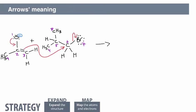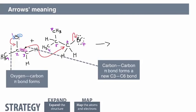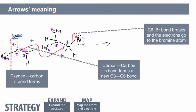The leftmost red arrow indicates non-bonding electrons on oxygen forming an oxygen-carbon bond. The carbon-carbon pi electrons will form a new bond between carbons 3 and 6. The third arrow indicates the carbon-6-bromine-7 bond is breaking, with the bonding electrons going onto the bromine atom.